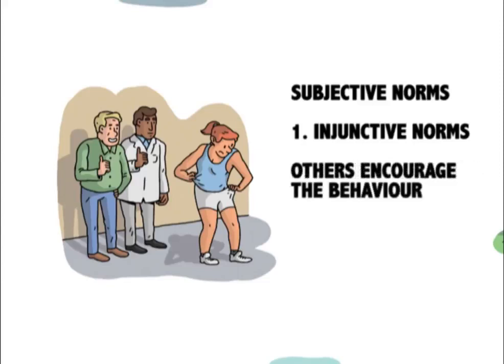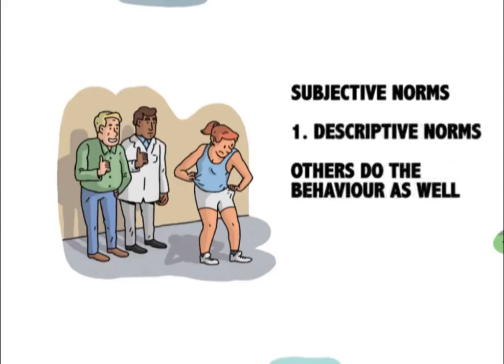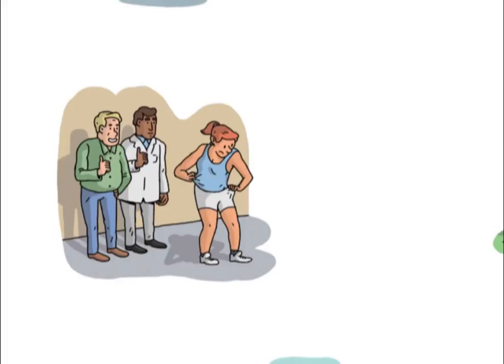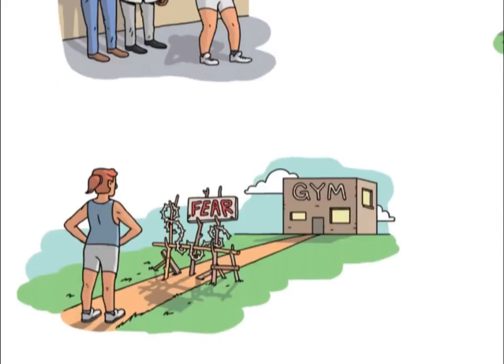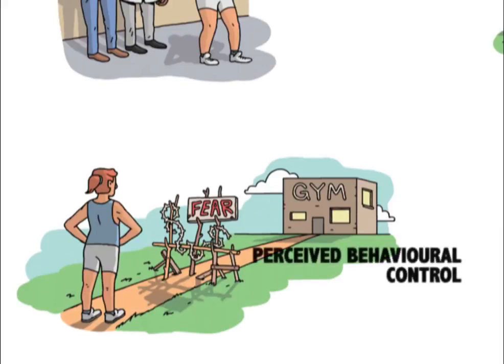Injunctive norms refer to whether others encourage an individual to do the behaviour, and descriptive norms relate to whether others in a person's social group engage or don't engage in the same behaviour. The third and final predictor of intentions, and an additional contribution of the theory of planned behaviour, is perceived behavioural control.